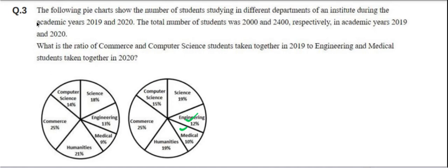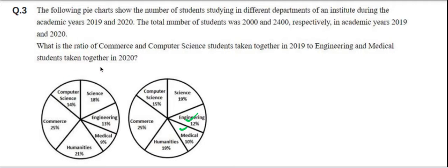Question number three. The following pie charts show the number of students studying in different departments of an institute during the academic years 2019 and 2020. The total number of students is 2000 and 2400 respectively. What is the ratio of commerce and computer science students taken together in 2019 to engineering and medical students taken together in 2020?